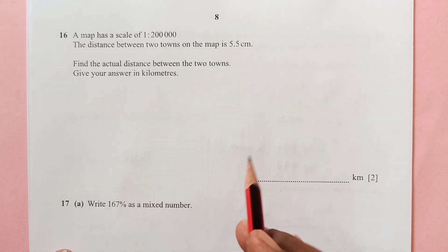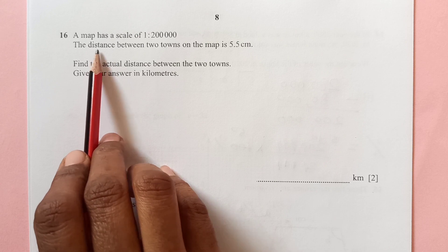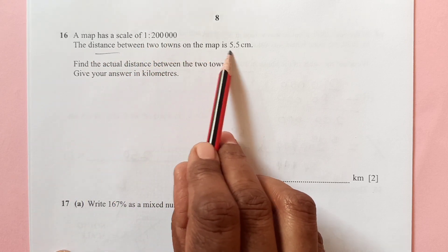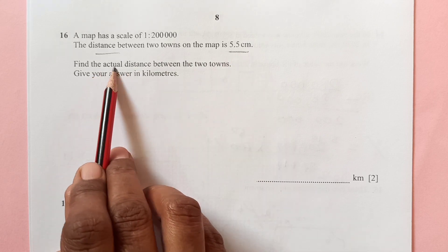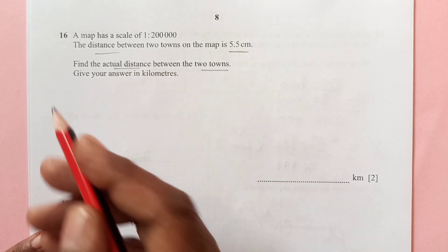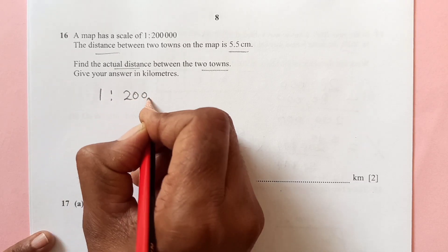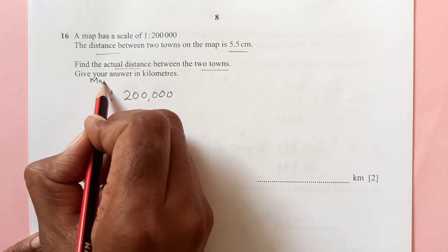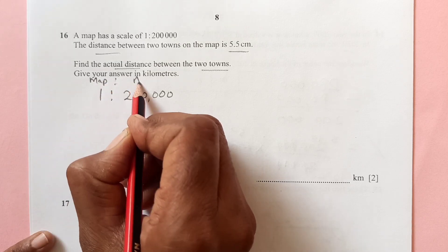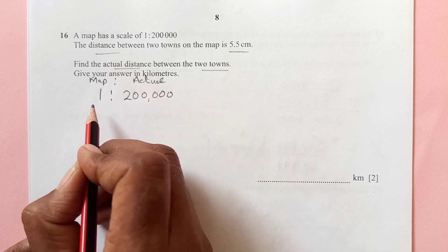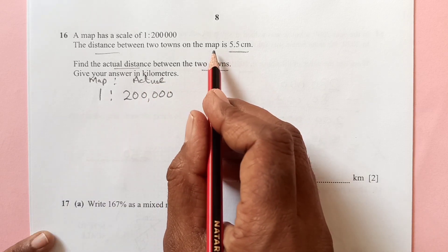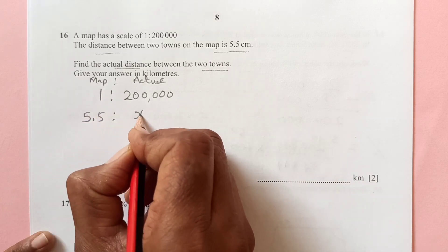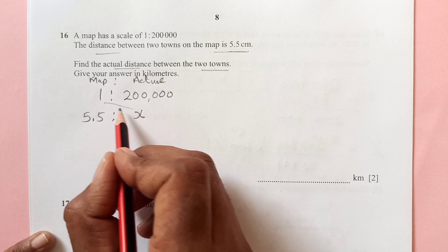Question number 16. A map has a scale of 1 to 200,000. The distance between two towns on map is 5.5. Give the actual distance between these two towns. So scale is 1 to 200,000. And on map this will be on map and this is going to be the actual, because this is smaller. Smaller will be on map. So now we are given that on map this is 5.5 and what will be the actual distance. Then you just cross multiply.